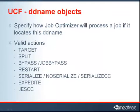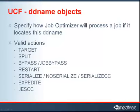Within the UCF policy, you can specify how the Job Optimizer will process a job if it locates a particular DD name. To execute steps containing this DD name on a specific ZOS image, specify Target. To split steps containing this DD regardless of other constraints, specify Split. To prevent splitting any job steps that contain this DD name, specify Bypass. To bypass optimization on any jobs that contain this DD name, specify Job Bypass.